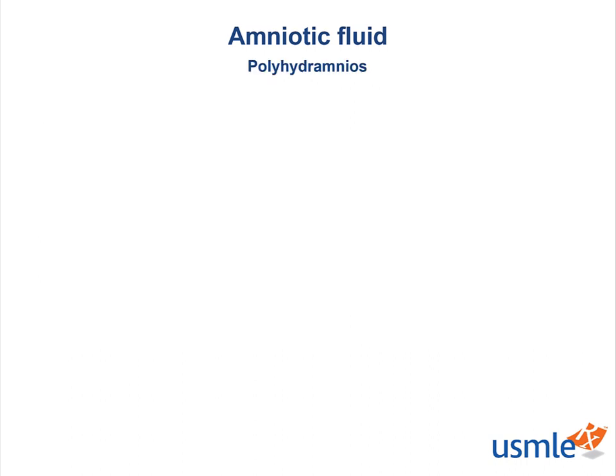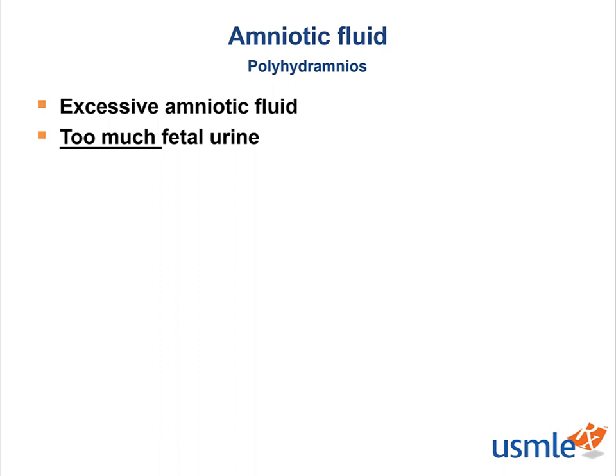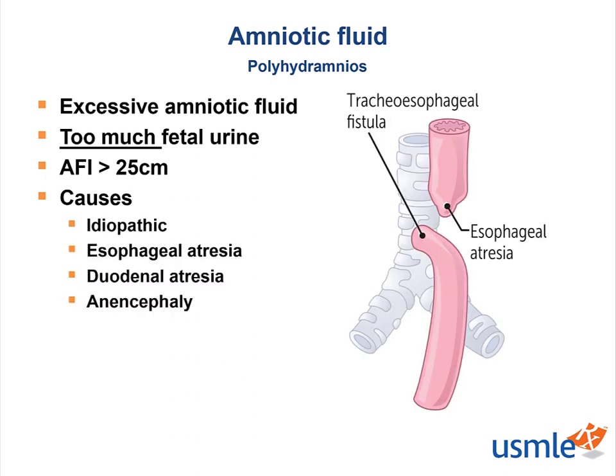Now, as with all biological processes, when something goes wrong with the mechanics, we will inevitably have some pathologies. Polyhydramnios is a process where there is excess fluid in the amniotic sac — basically, too much fetal urine — typically with an amniotic fluid index greater than 25. The etiology could be idiopathic, but since fluid is mostly cleared by fetal swallowing, fetal malformations such as esophageal atresia, duodenal atresia, and anencephaly can lead to inability for the fetus to swallow.